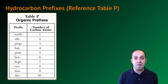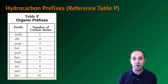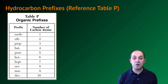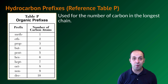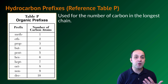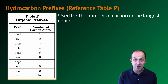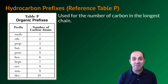Another major reference table useful for hydrocarbons is the table of hydrocarbon prefixes on Reference Table P. These prefixes are used for the number of carbons in the longest chain in the molecule. Notice they're different from the covalent prefixes — it's not mono, di, tri, etc. Instead it's meth, eth, prop, and so on from there.